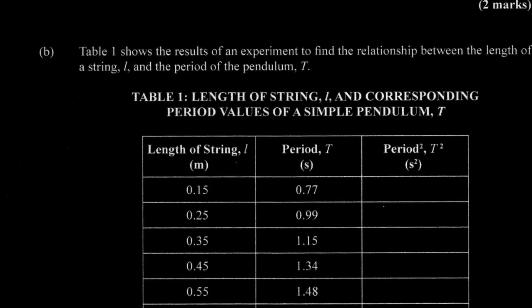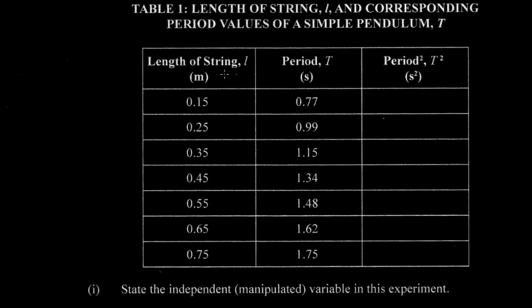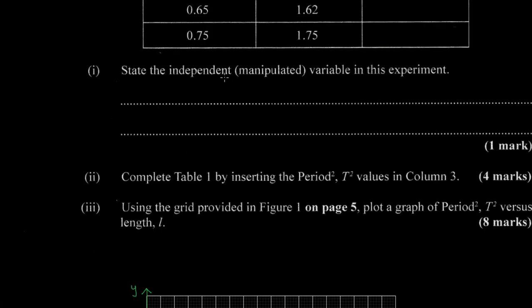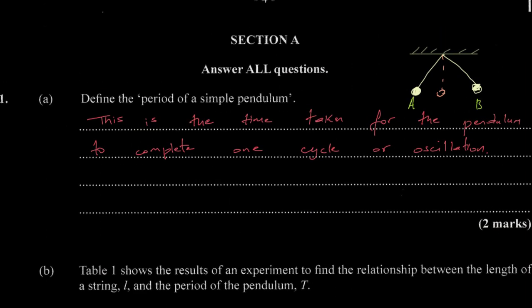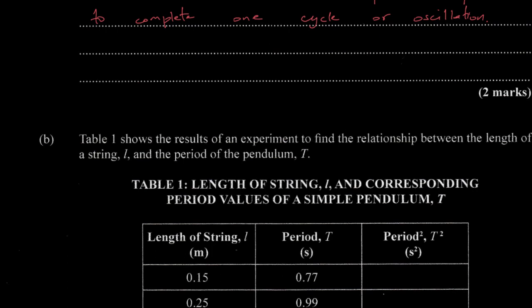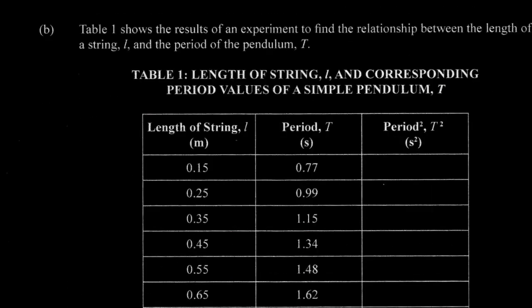Next, the question says that Table 1 shows the results of an experiment to find the relationship between the length of a string L and the period of the pendulum T. We're given length in meters, period in seconds, and a column for period squared. We're to state the independent, also called the manipulated, variable. The manipulated variable is the variable that we as the experimenter actually change.